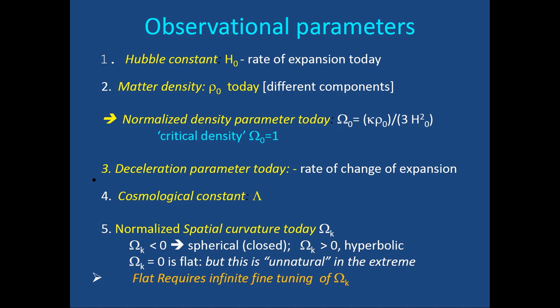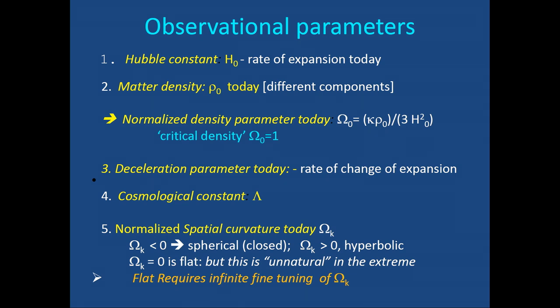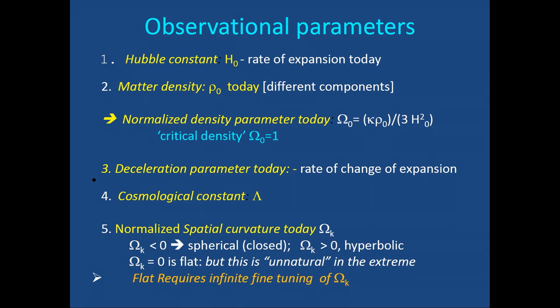To compare with observations we need observational parameters: the Hubble constant H₀ (the current expansion rate), the matter density ρ₀ with its components, a dimensionless density parameter Ω (matter density × gravitational constant / H²), where Ω = 1 is the critical density, the deceleration rate, the cosmological constant, and the normalized spatial curvature. If curvature is negative the universe is spatially closed; if zero, space sections are flat — though flat space requires extreme fine-tuning.